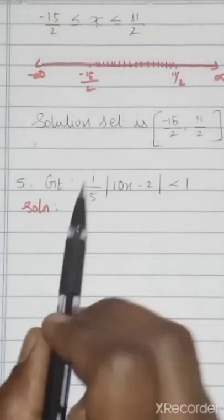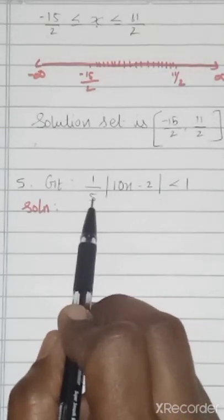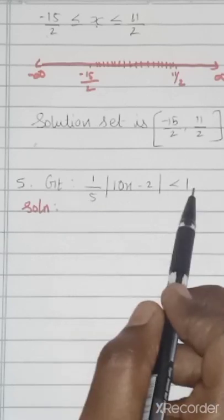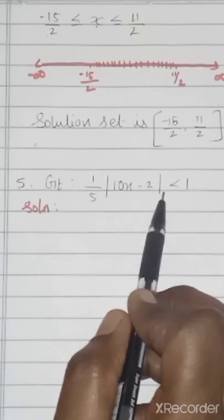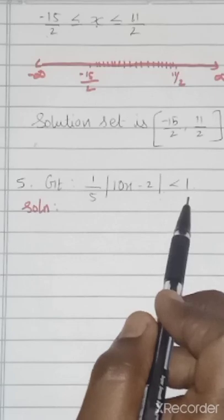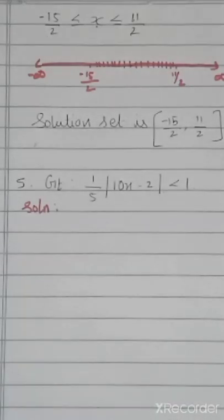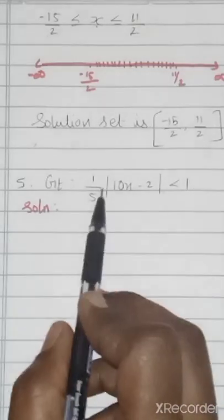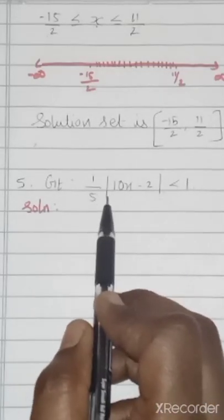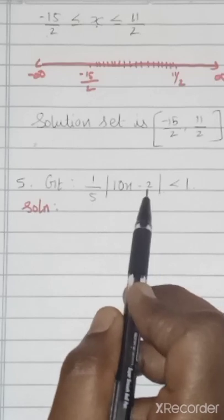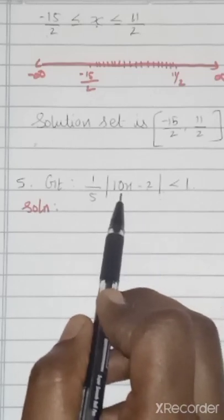First, take 5 to that side: |10x − 2| < 5. Then remove the modulus, taking minus 5 and plus 5: −5 < 10x − 2 < 5. Taking 2 to that side: −5 + 2 < 10x < 5 + 2, so −3 < 10x < 7.